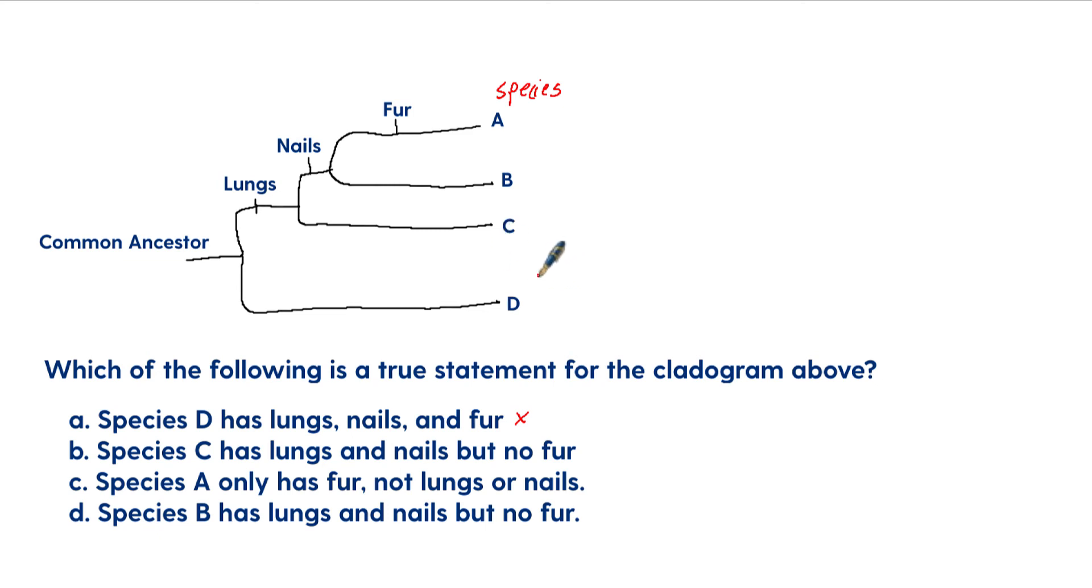C says species A only has fur, but not lungs or nails. It looks like this might be confusing because fur is so closely tied to A, but it's also going to have nails and lungs. Let's look at D. Species B has lungs and nails, but no fur. So yes, if you follow it along, it will have lungs, it'll have nails, but no fur. And so the correct answer is D.